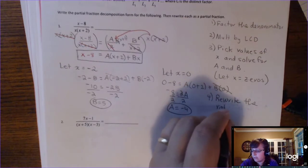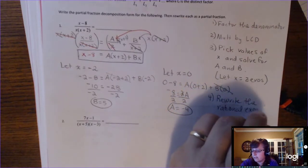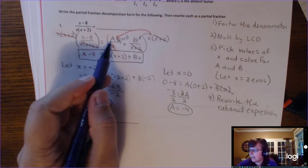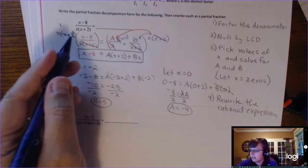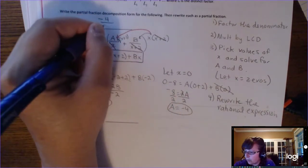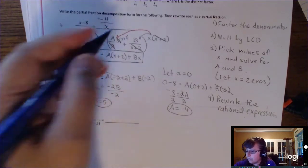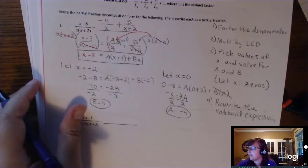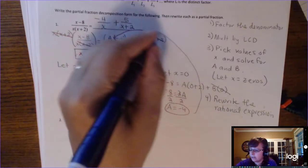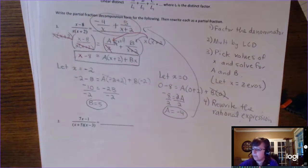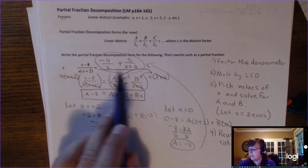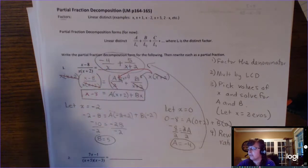Don't forget the last step: rewrite the rational expression. You go back to the beginning template where A is over x. So this equals negative 4 over x, because A was negative 4, plus B over x plus 2, and B is 5. That's your final answer. That's partial fraction decomposition — we took one rational expression and pulled it apart so that it's two rational expressions.